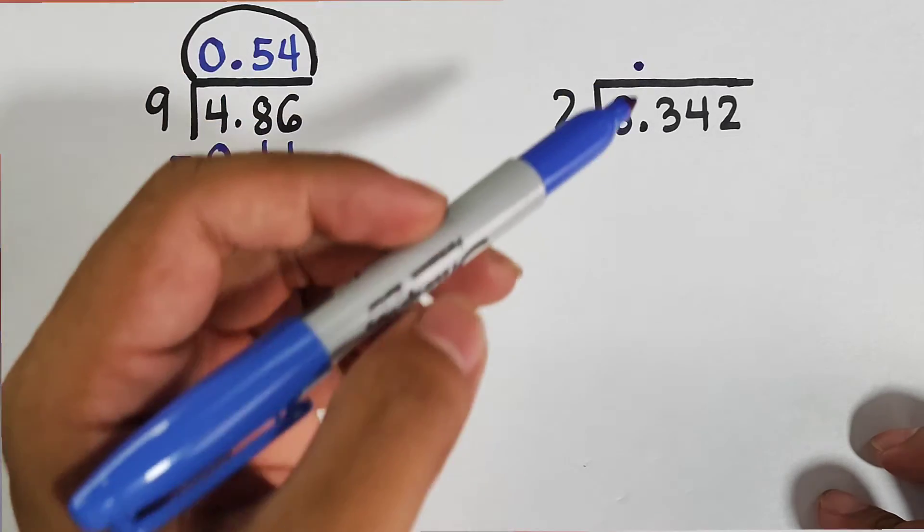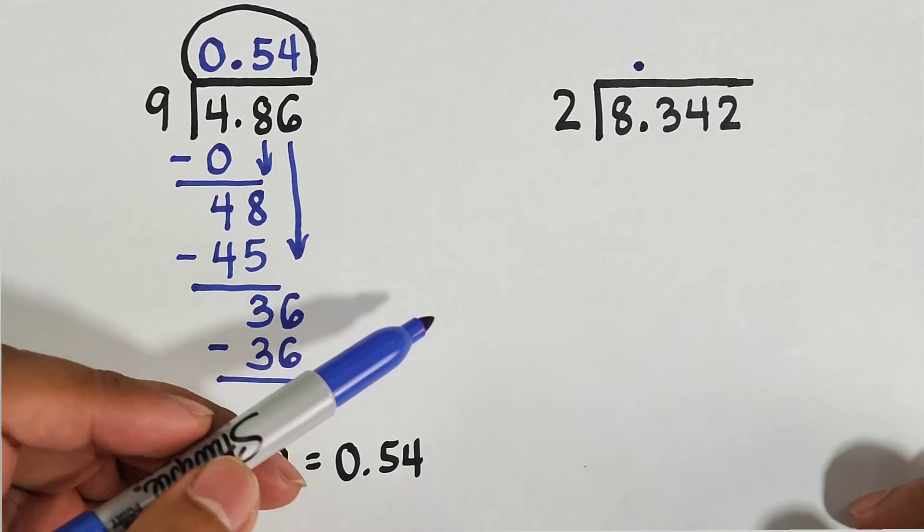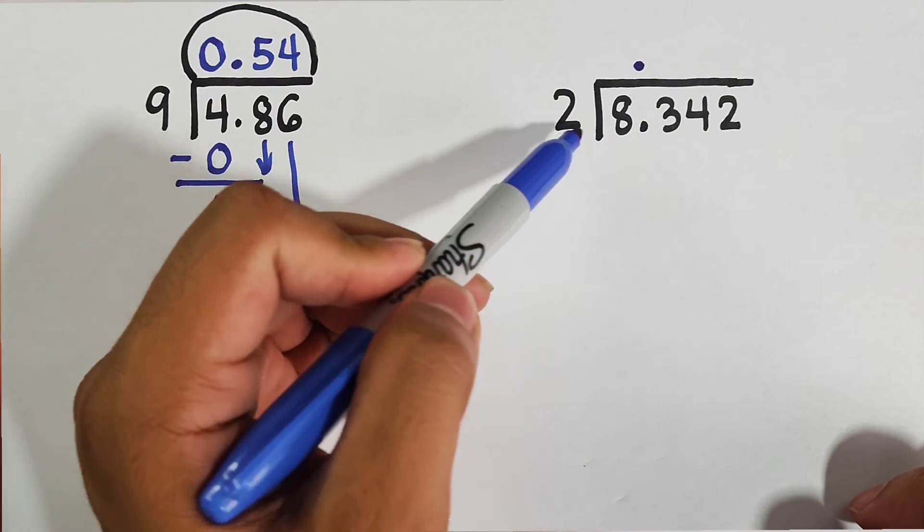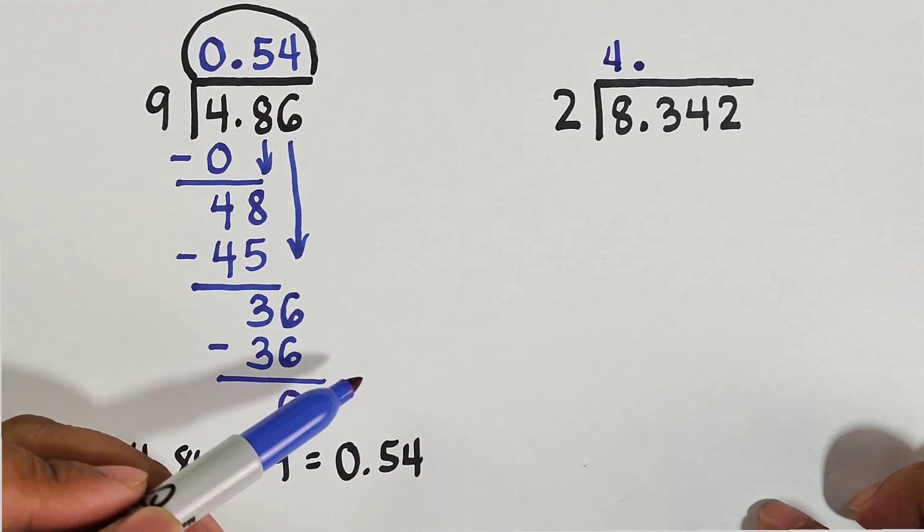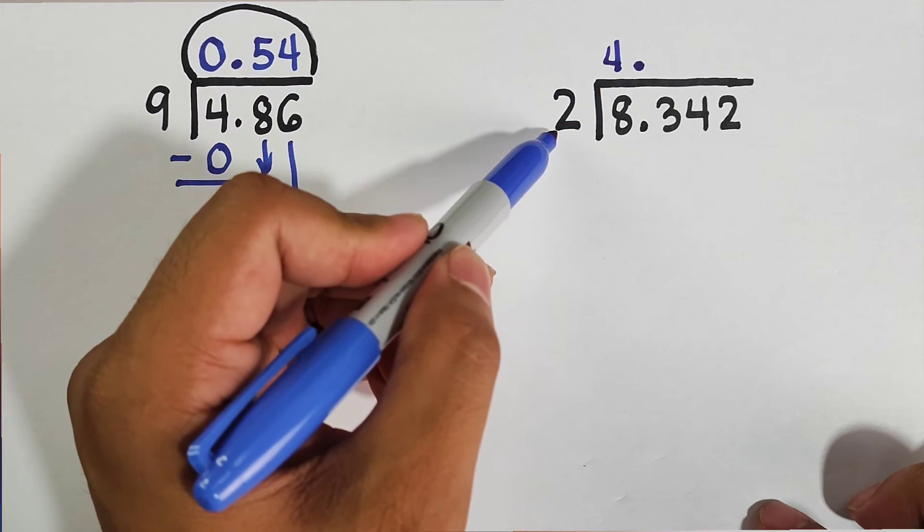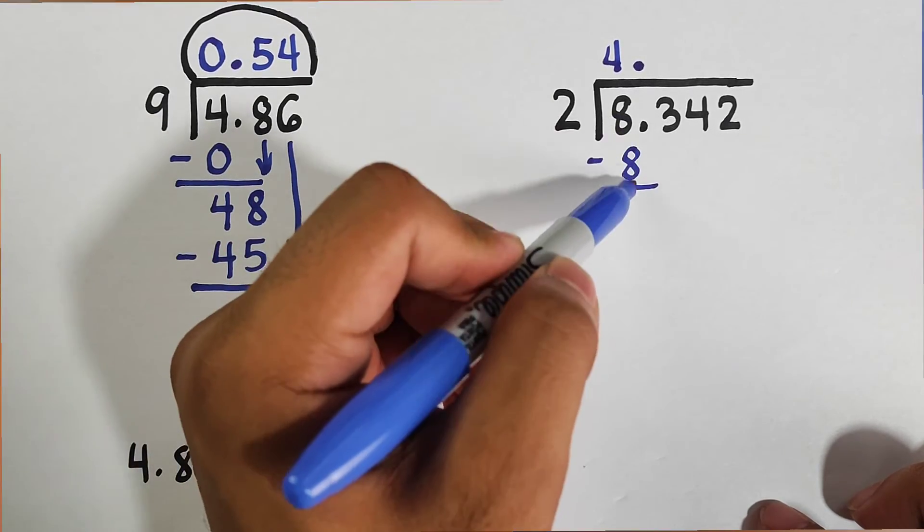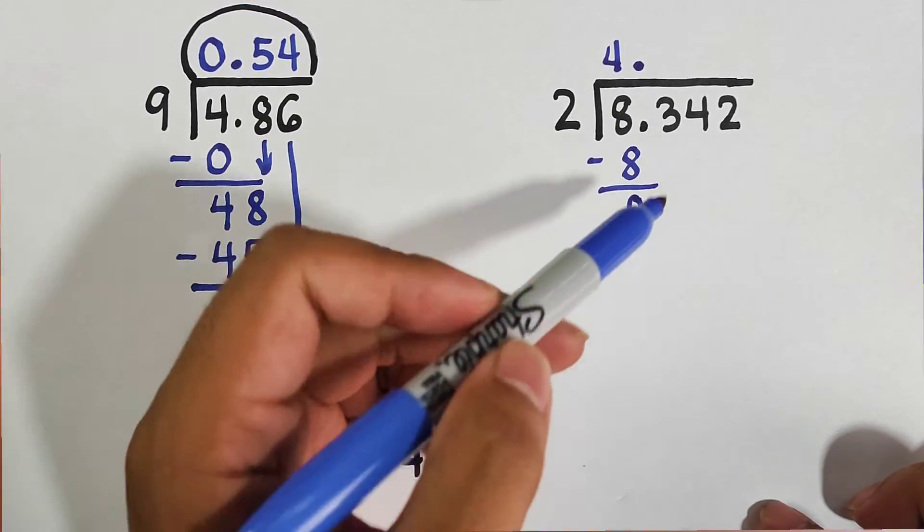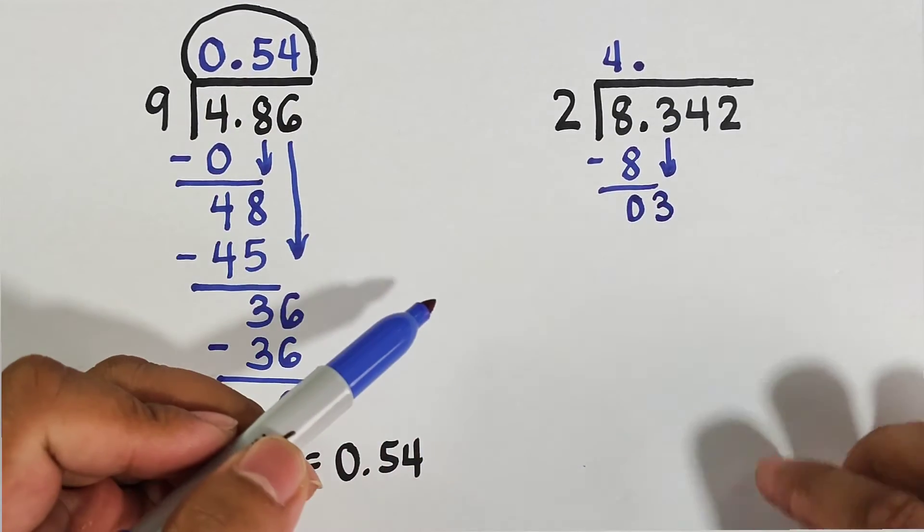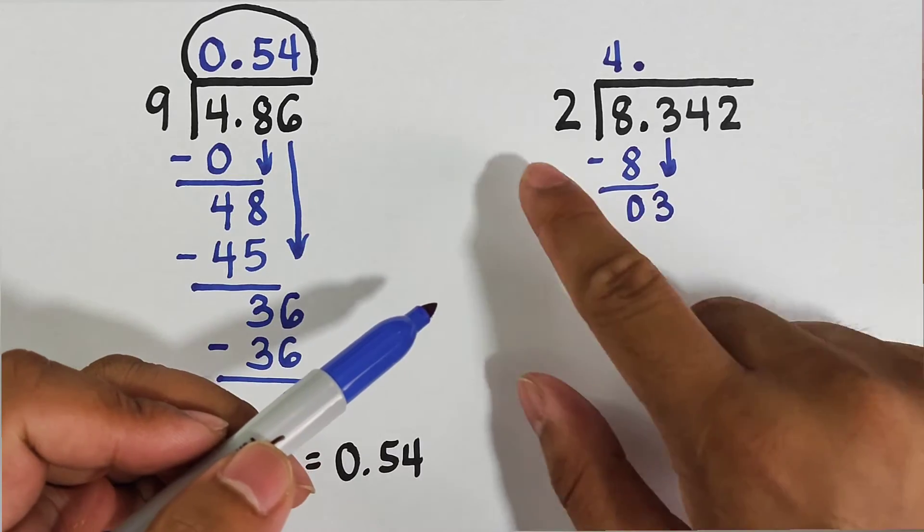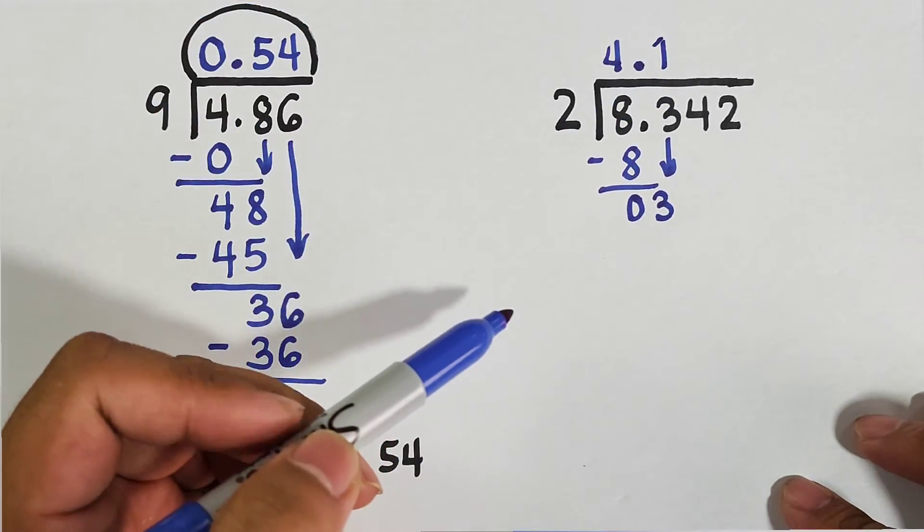For item number 2, we are given the decimals 8.342 divided by 2. First thing you need to do is to put a decimal point where the original decimal point of the dividend is placed. So what we will do here is 8 divided by 2 equals 4. 4 divided by 2 equals 8, so we will subtract. This equals 0.